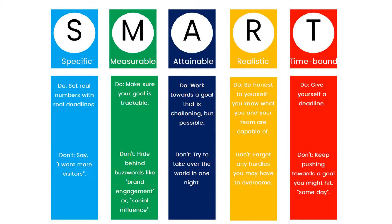1. The objectives must be specific. Setting a SMART goal should not be ambiguous. Rather, it must have a clear and concise objective. When setting a goal, be specific about what you want to achieve. 2. Goals must be measurable. Establish the criteria for measuring your progress while you work towards your goal.